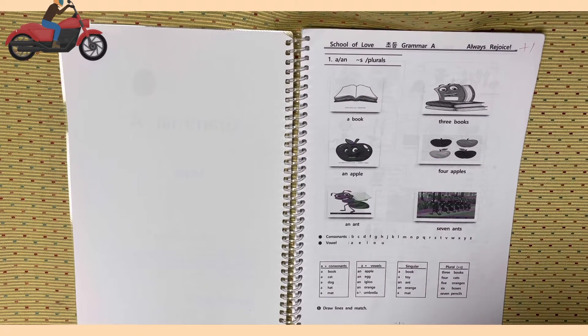단수에 A를 붙이죠. 복수에는 S를 붙입니다. A book, a toy, an ant, an orange, a mat. Three books, four cats, five oranges, six boxes, seven pencils.